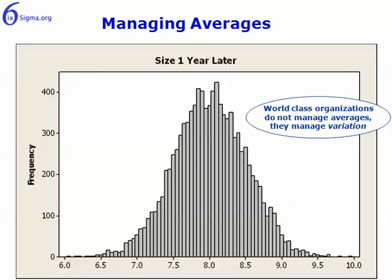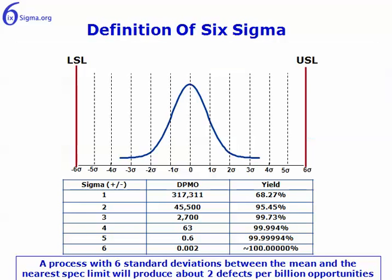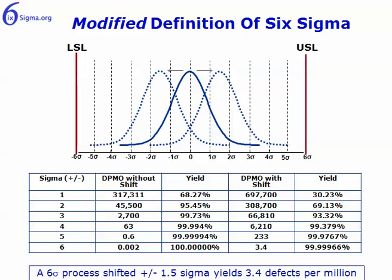The third takeaway has to do with the definition of Six Sigma. By definition, Six Sigma exists when we have six standard deviations between the average of the data set and a specification limit of some kind. That is represented numerically by two defects per billion opportunities — not the more common 3.4 defects per million, which you tend to see in the literature and other Six Sigma textbooks and training.